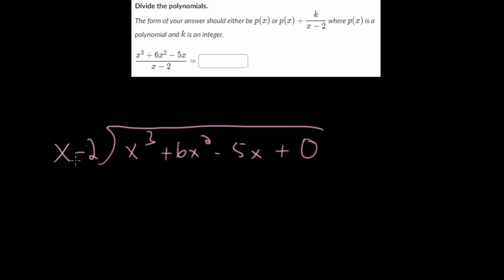And we just start our process. How many times does x minus 2 go into x cubed? Or what can we multiply this by to get a leading term of x cubed? And we can multiply everything by x squared. And we'll want to find the remainder now. So we'll actually carry out that multiplication. x squared times x is x cubed. x squared times minus 2 would be minus 2x squared.